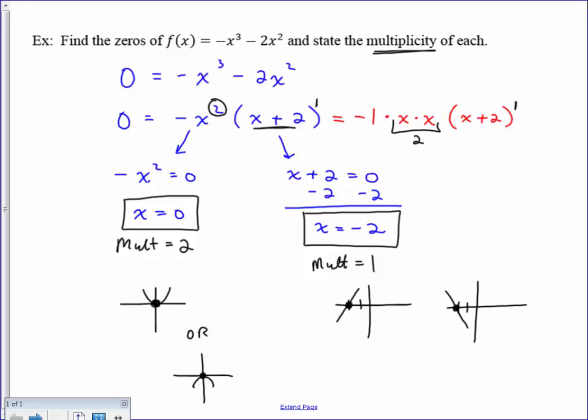But basically there, if you have an even multiplicity, then that means that your graph turns at that particular zero. If you have an odd multiplicity, then that means that your graph goes through that zero.